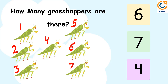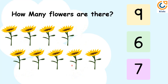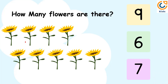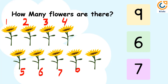So the answer is 7. How many flowers are there? Let's count the number of flowers. 1, 2, 3, 4, 5, 6, 7, 8, 9. There are 9 flowers. The answer is 9.